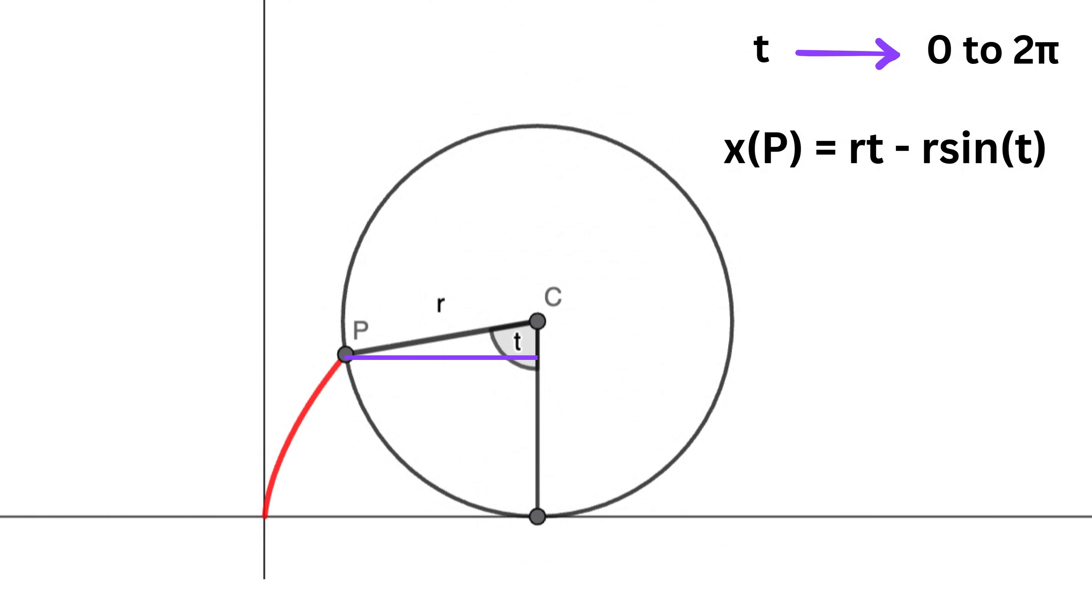Now finding the y-coordinate of point P is super easy. This is R, and this side length is equal to R cos T, right? Therefore, the y-coordinate of point P is simply R minus R cos T.